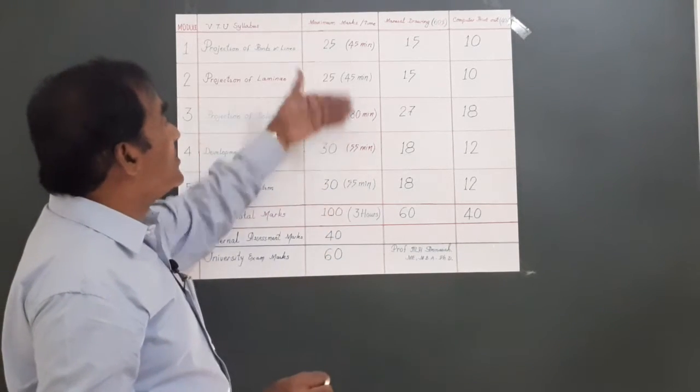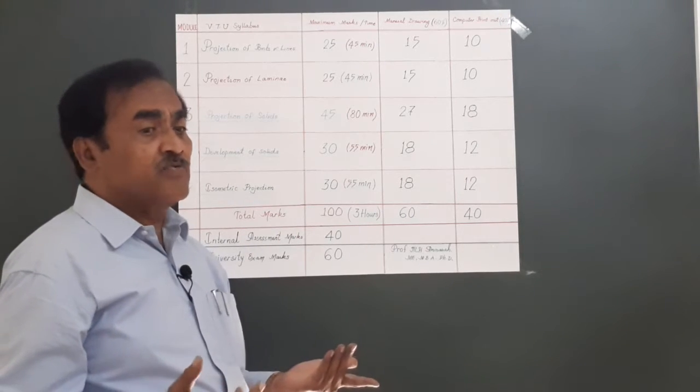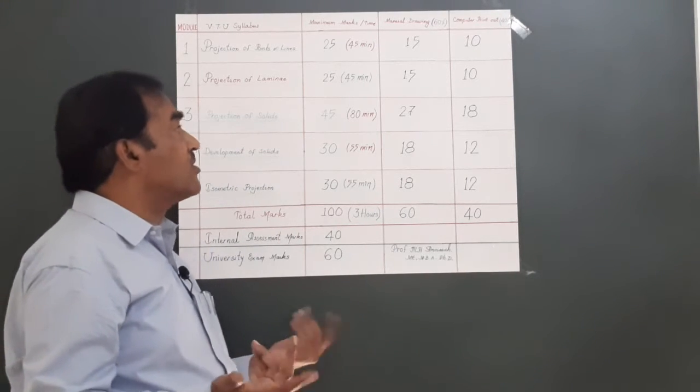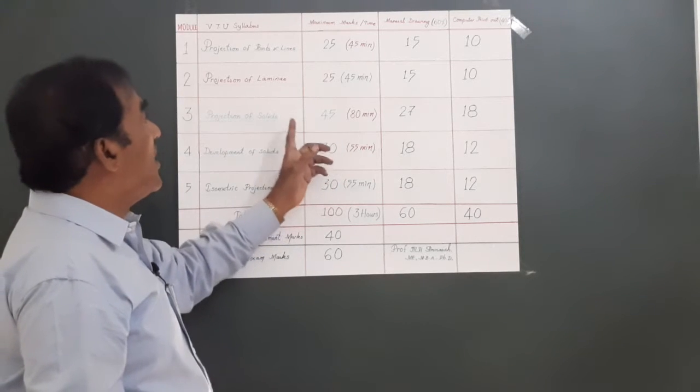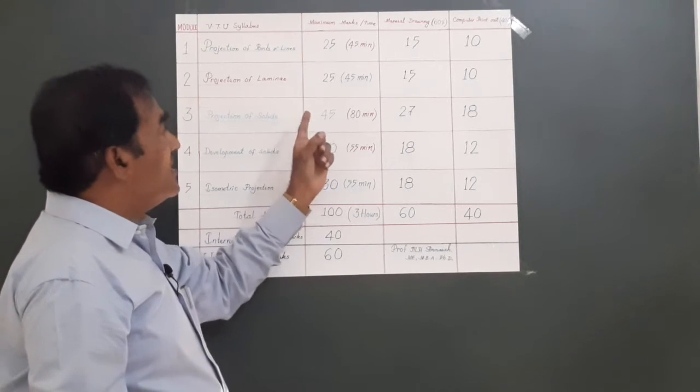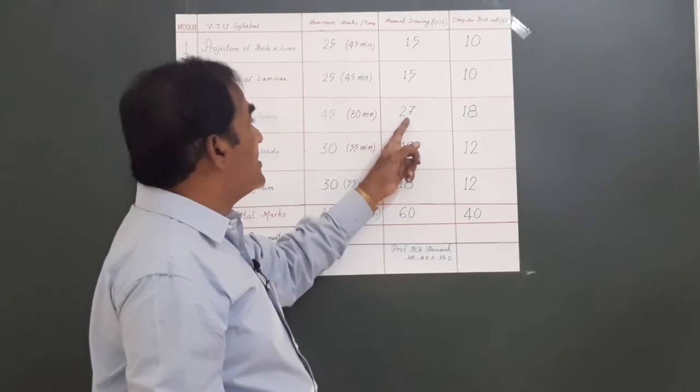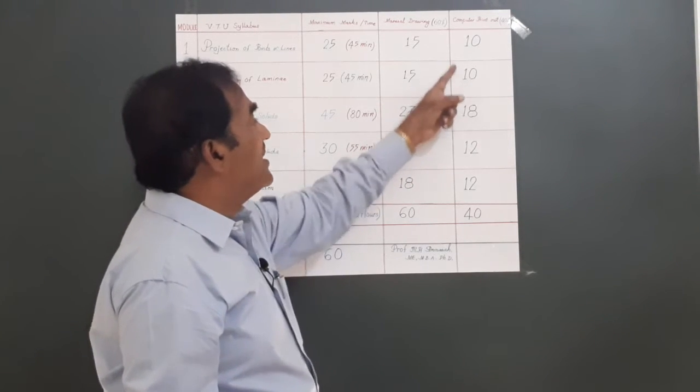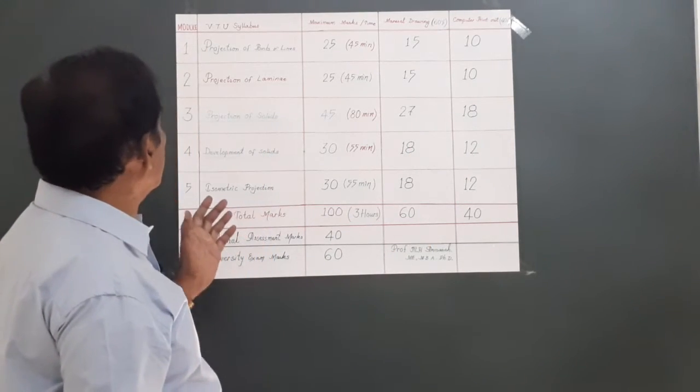From the other parts you have only 25 plus 30, which is 55 marks. We do not know how many marks the student will be able to get. In this projection of solids, you have 45 marks: 60 percent of that is allocated for manual drawing, carrying 27 marks, and 18 marks for computer printout.